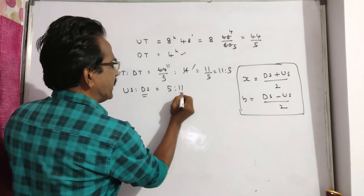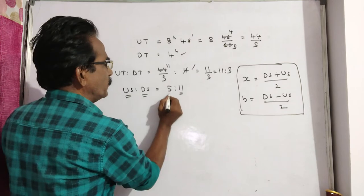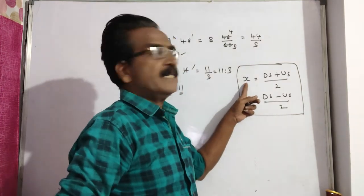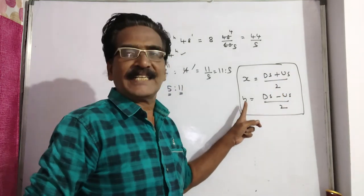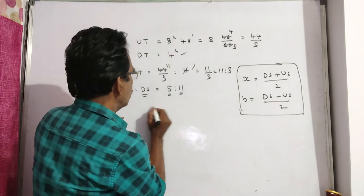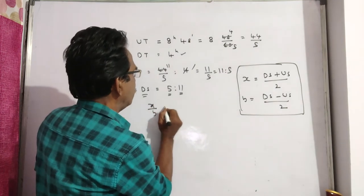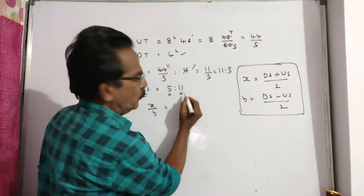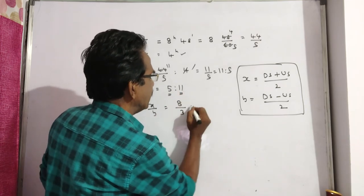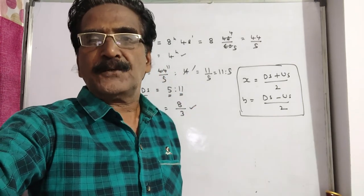Speed of the boat equals (ds + us)/2. Speed of the current equals (ds - us)/2. So the ratio x/y equals (11+5)/2 : (11-5)/2, which is 16/2 : 6/2, giving us 8:3. Eight to three is your answer, friends. Thank you.